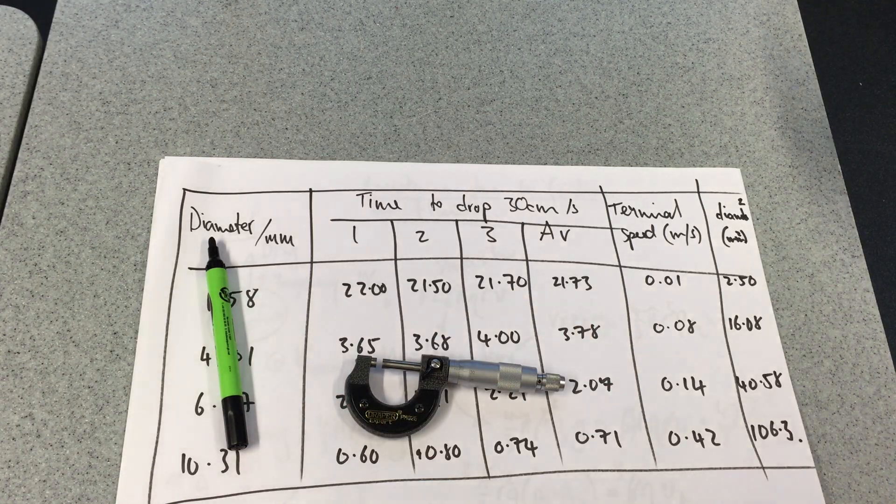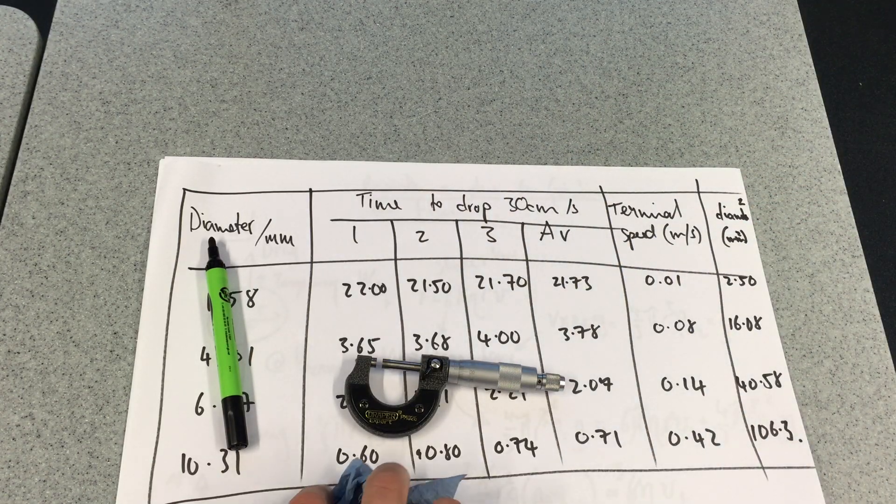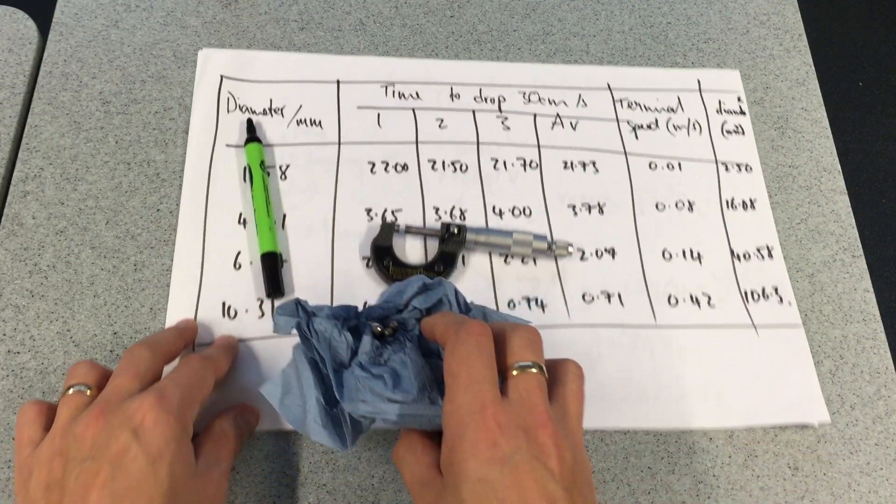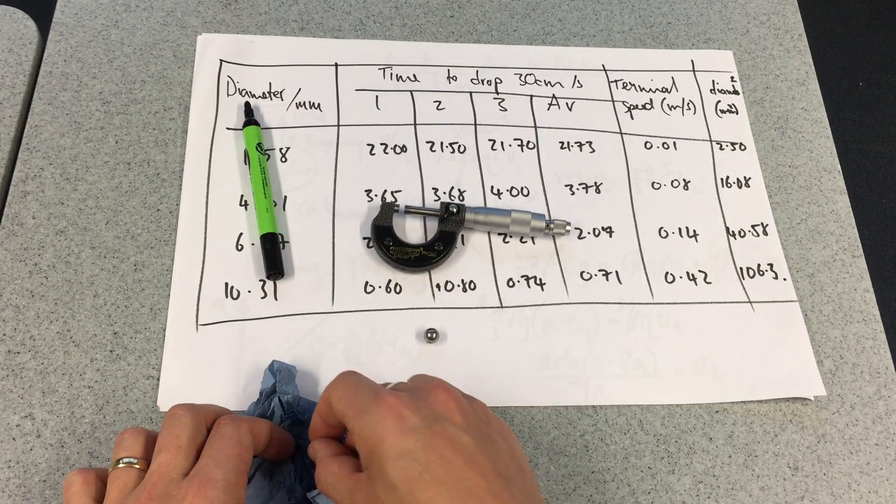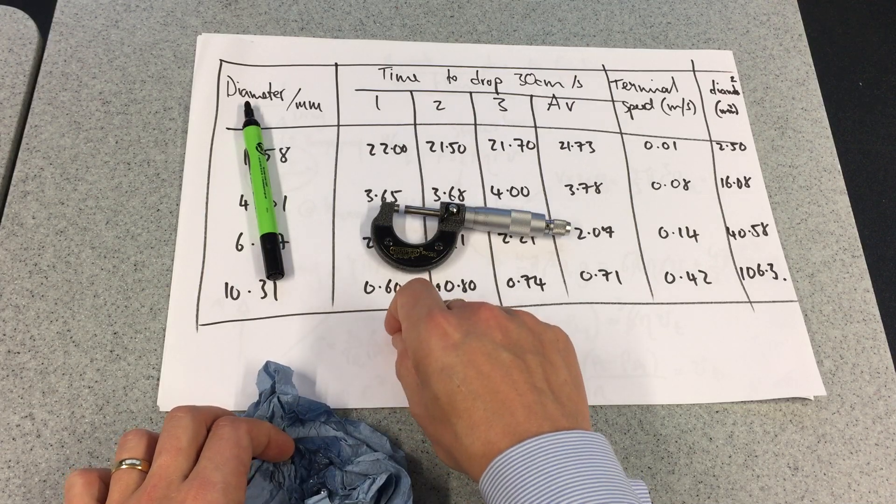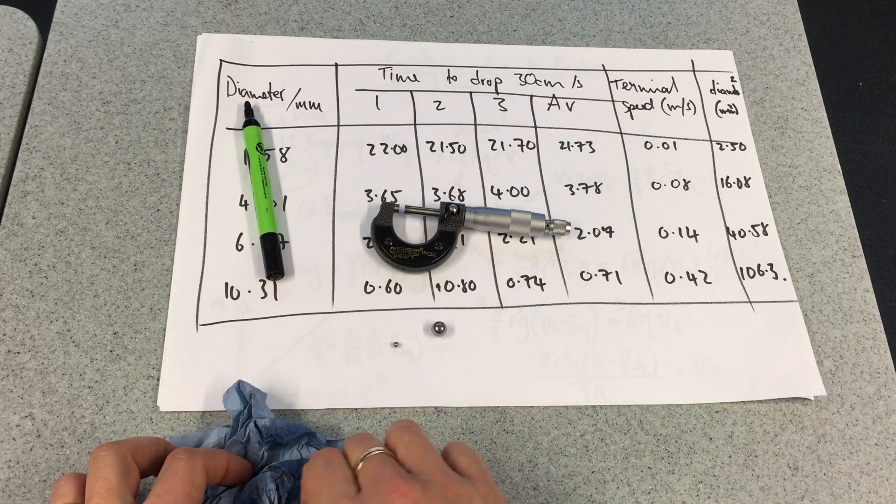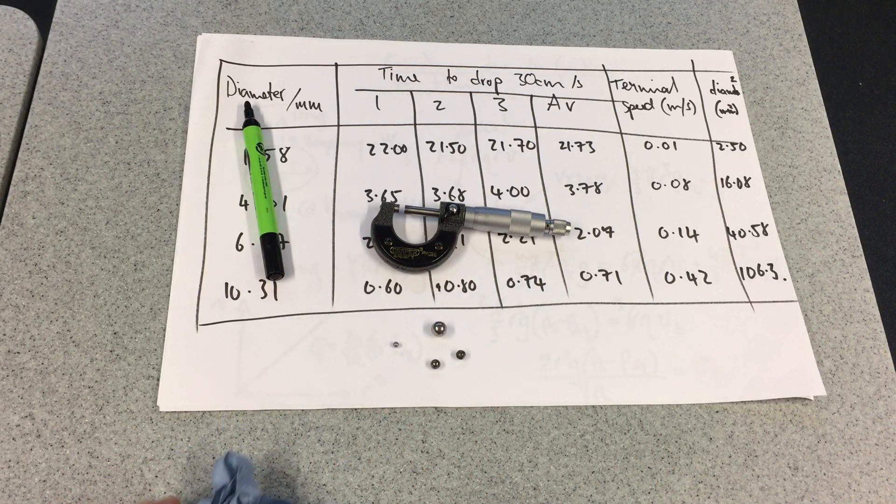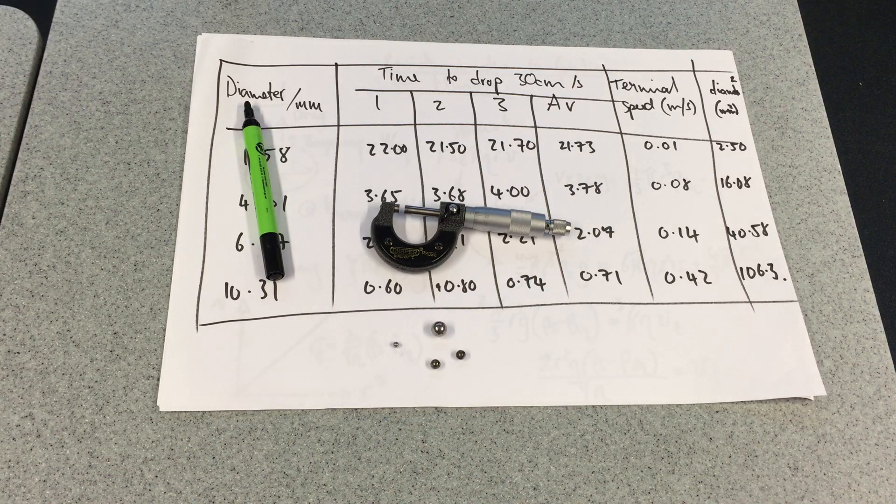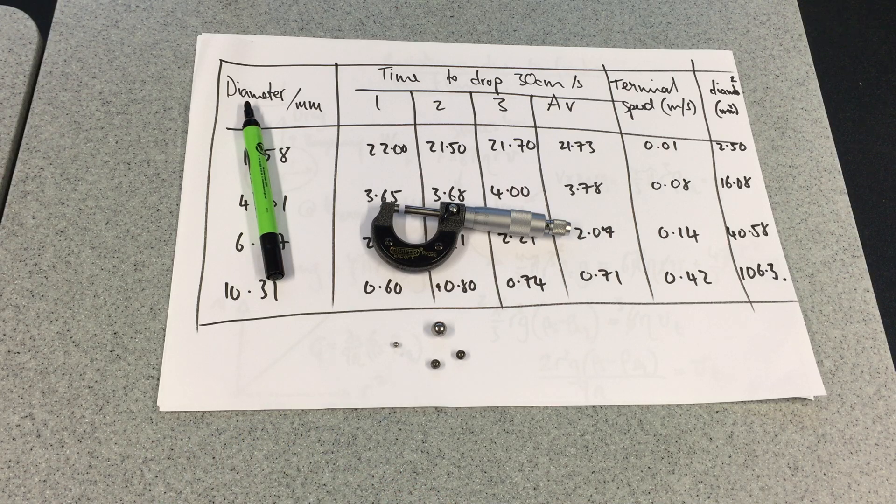The balls themselves, which are covered in glycerine, are tiny. Some of them are incredibly small. The reason why they need to be so small is because we want the time period to be as large as possible when it falls through the glycerine. To achieve that, we needed a very small ball.